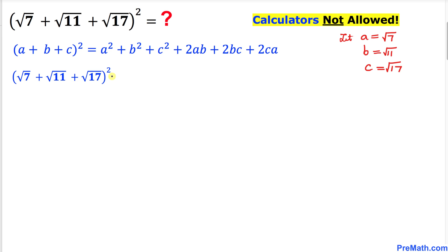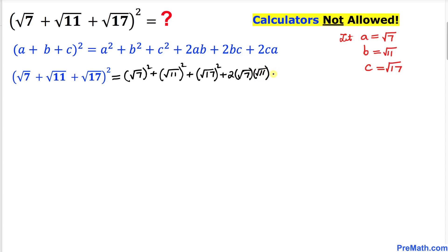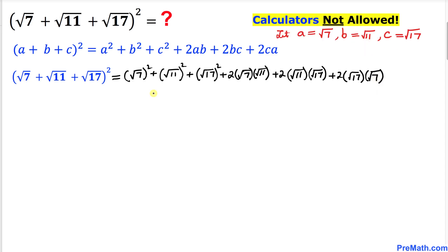Let's apply this formula. This is going to be equal to: square root of 7 whole square, plus square root of 11 whole square, plus square root of 17 whole square, plus 2 times square root of 7 times square root of 11, plus 2 times square root of 11 times square root of 17, and finally plus 2 times square root of 17 times square root of 7.